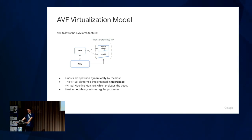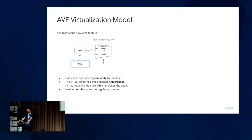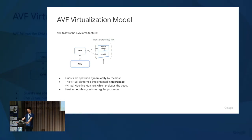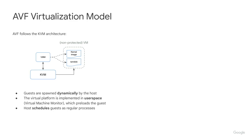In terms of how AVF expects virtualization to happen, it is very close to what KVM does. There is a user-space process called the virtual machine monitor (VMM) which talks to the kernel — specifically to KVM — to configure the virtual machine. The VM then becomes essentially user-space code to the kernel scheduler. The VMM also configures the memory donated to the guest, typically loading the kernel, ramdisk, and device tables by mapping them into that memory before the guest starts.